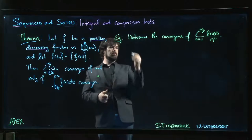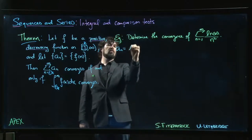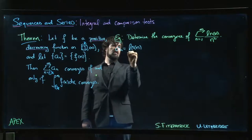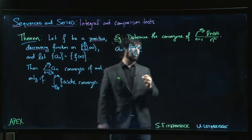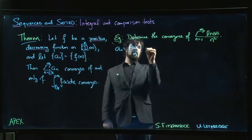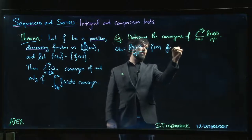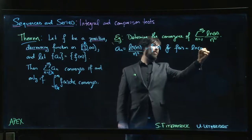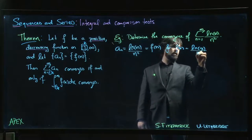Alright, so we make some identifications. We say the terms are natural log of n over n squared. That's what a_n looks like. And we can write that as f(n) where our function f(x) is the natural log of x divided by x squared.